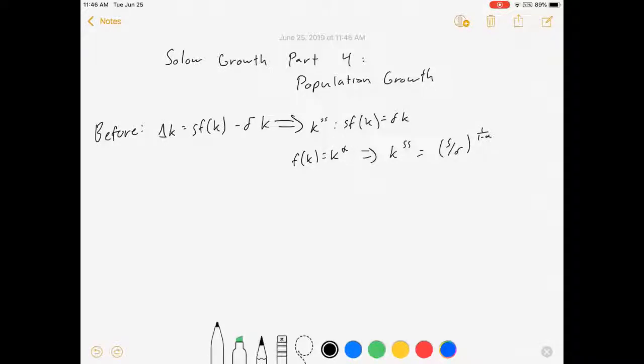All right, so with all that stuff aside, how do we throw in population growth? Well, we're going to have the population growth rate be called N. And N is a rate, just like S is a rate, just like little delta depreciation is a rate.